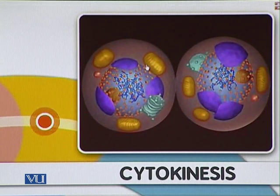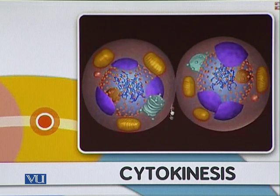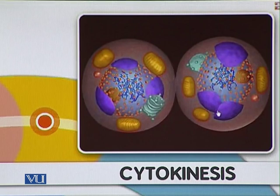Organelles such as mitochondria, Golgi apparatus, and ER have also been divided between the two cells approximately equally. This was the process of mitosis. Next, we will look at the process of meiosis.